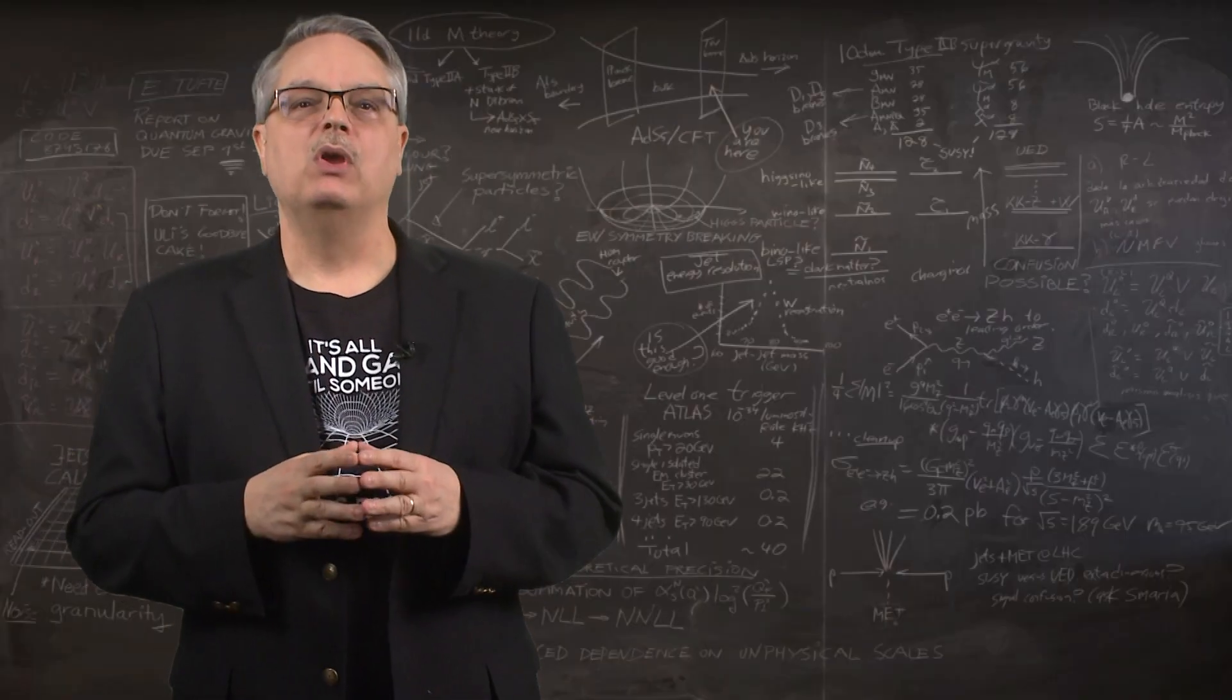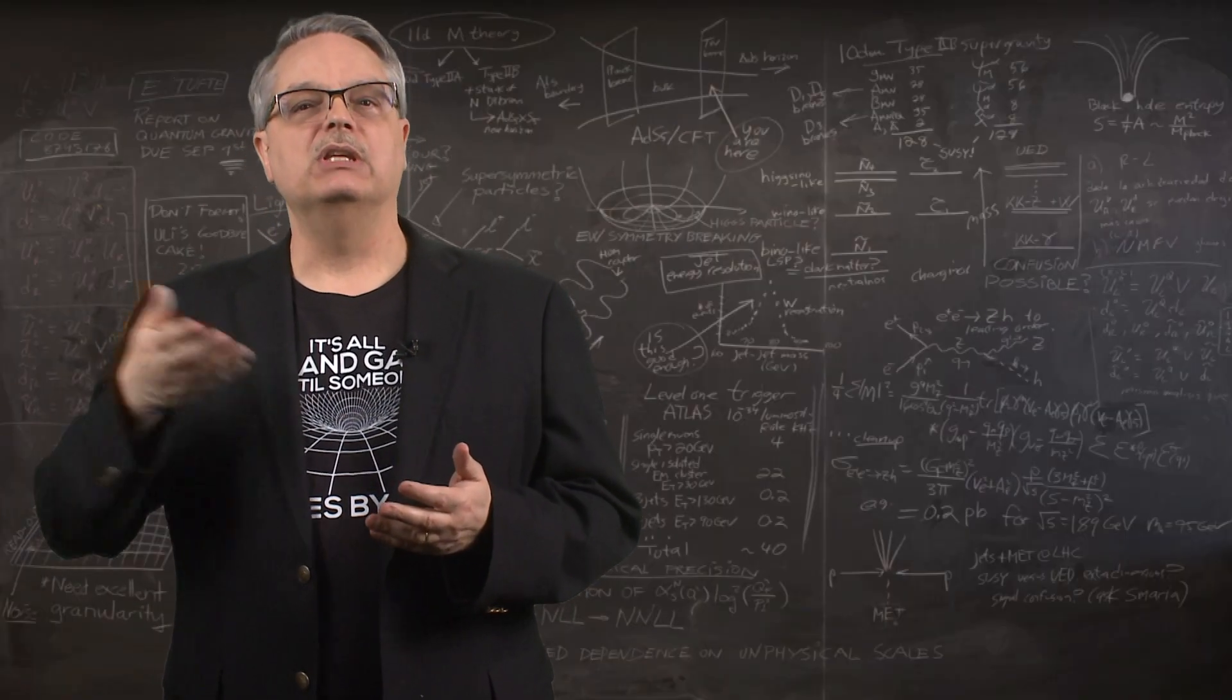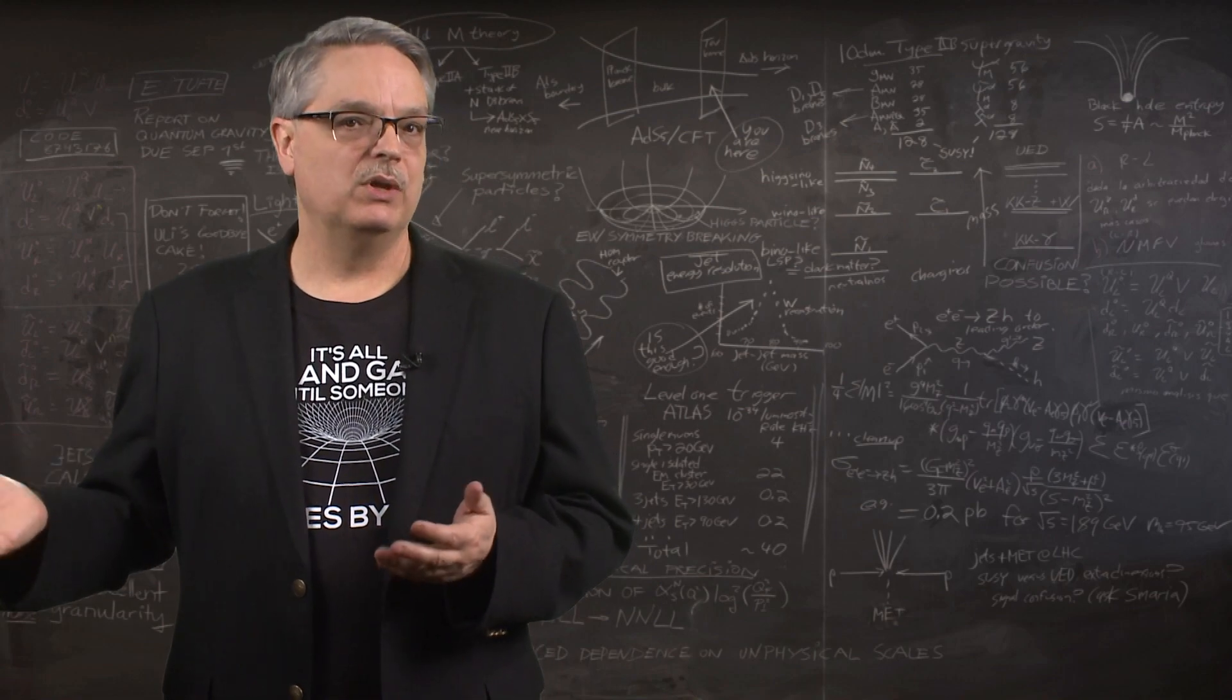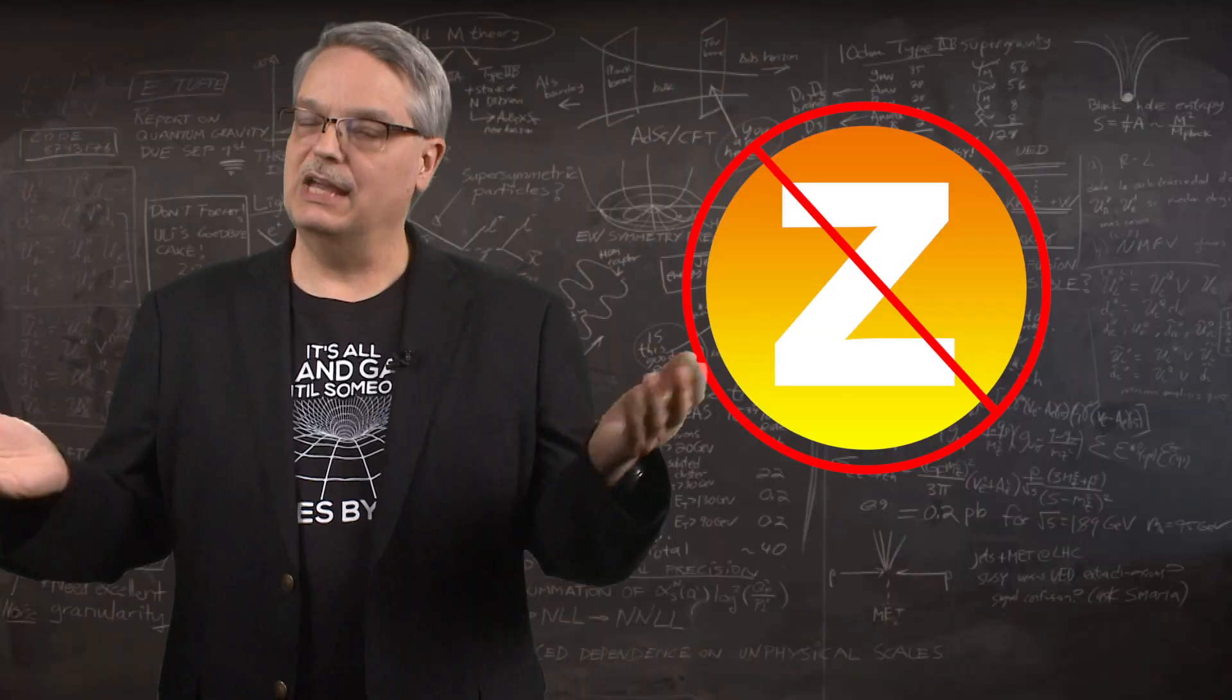So that last statement is interesting. Why is it the only flavor changing weak interaction is the one with a W boson? Why is there not one with a Z boson? Well, let's explore what that would look like.